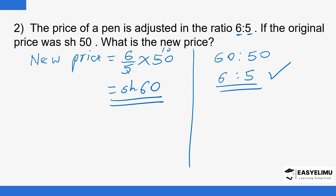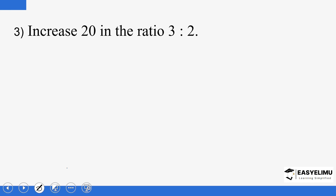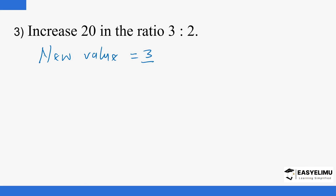Another example: increase 20 in the ratio of 3 is to 2. We do the same thing. The new value should be equal to 3 out of 2, multiplied by 20. Two goes into 2 once and into 20 ten times, so 10 times 3 is 30. If you increase 20 in the ratio of 3 to 2, the value you obtain is 30.